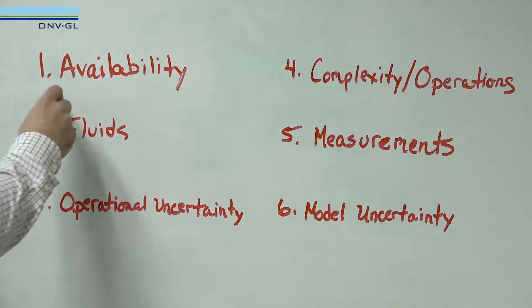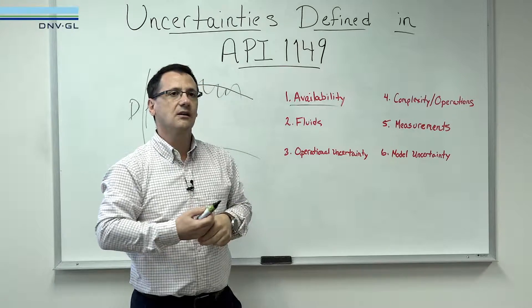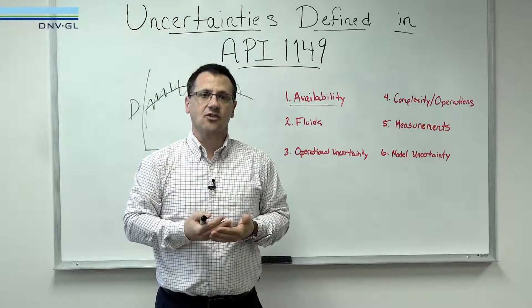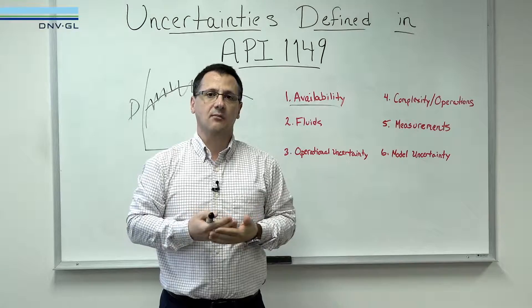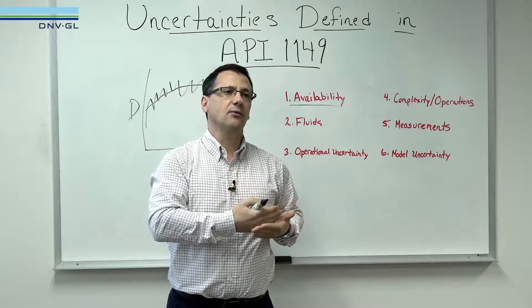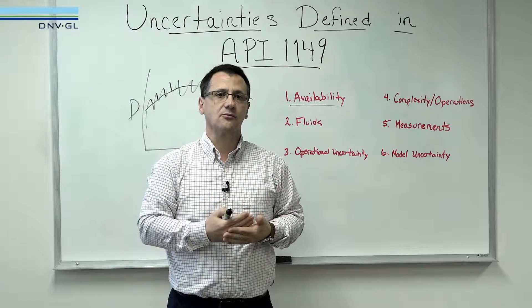For example, availability. Communication outages are common within pipeline monitoring. If you have a communication outage, your leak detection system should not be disabled.